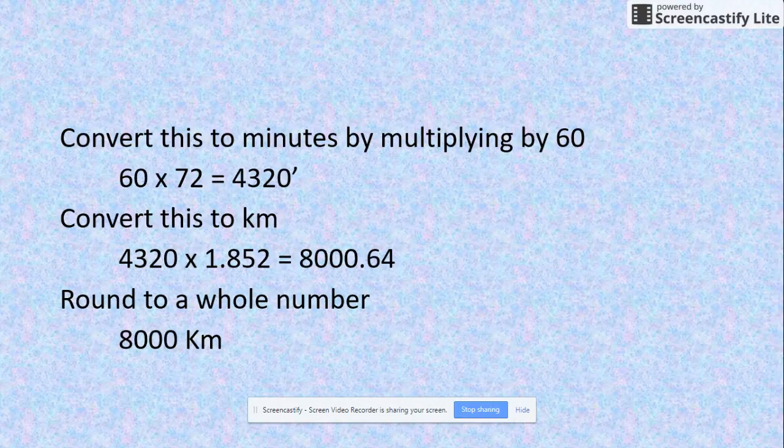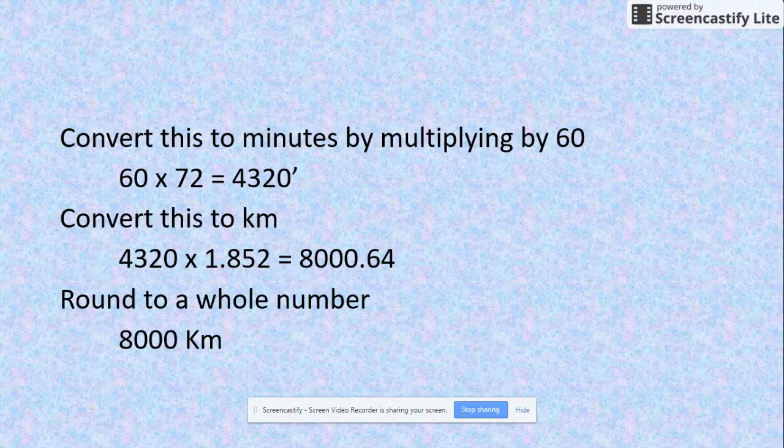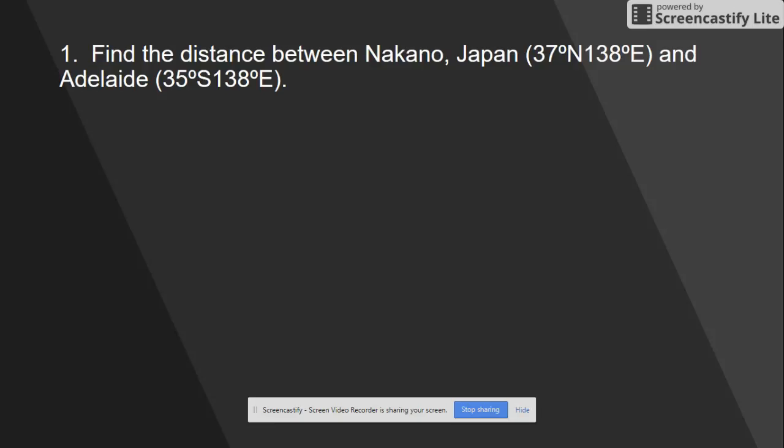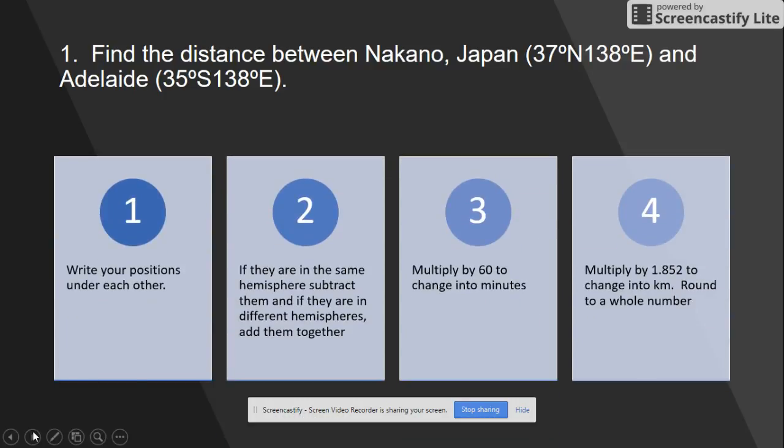I'll step you through it step by step, but I actually want you to put the figures in. For number one, find the distance between Nakano, Japan and Adelaide. First thing: write your points underneath each other so you can see which are different. If they're in the same hemisphere, subtract them; if they're in different hemispheres, add them together. Multiply by 60 to change it into minutes, then multiply by 1.852 to change into kilometers, then round to a whole number.